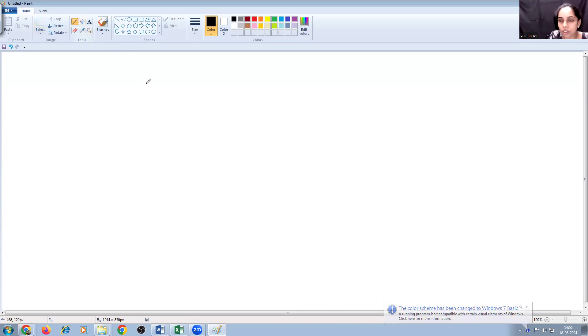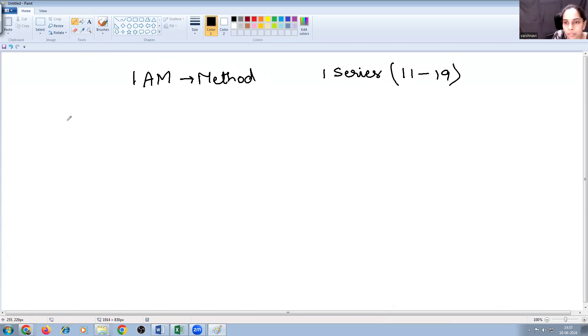So basically this is called 1AM method. It is used to multiply numbers starting from one series, that is numbers between 11 to 19. For example, 11 into 12 or 13 into 12 or 15 into 11, whatever it is, or 17 into 13.